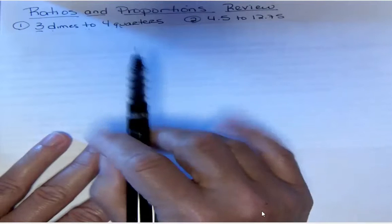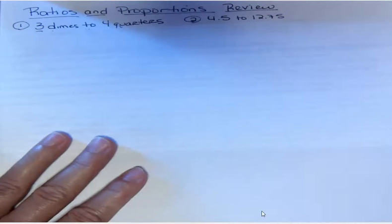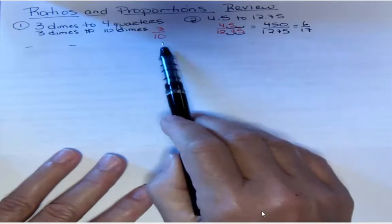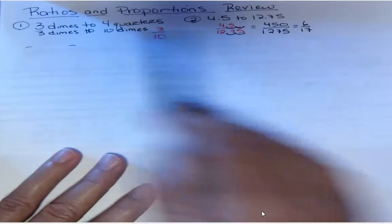What I decided to do on this one was to change it into dimes, so I said three dimes and then four quarters is ten dimes, and that's how I got 3 to 10. Whatever comes first goes on top and second goes on the bottom.